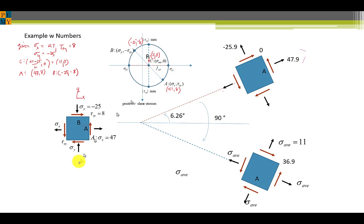Next we have point a, sigma x is 47 and the shear stress is 8. So we go out here to 47 and 8 down in the positive direction. Next we have point b which is negative 25 and negative 8 because we're in the upper half of Mohr's Circle.